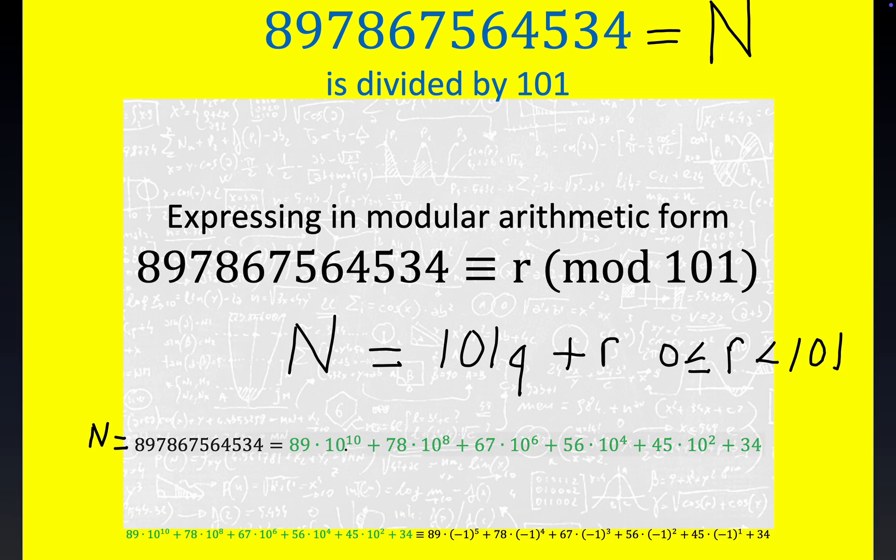It's 89 times 10 to the 10th, 78 times 10 to the 8th, all the way out. And it's easier to see if you start from over here. 34, of course, would be times 10 to the 0 if you want to write it that way, and then 45 times 10 squared, the next, these digits right here, and so on.